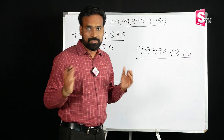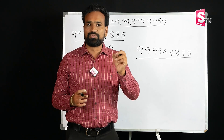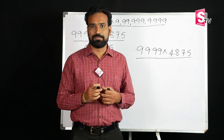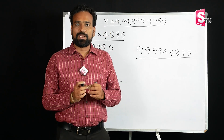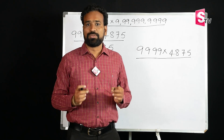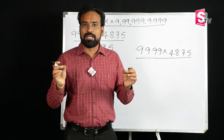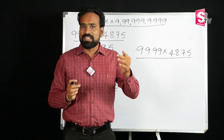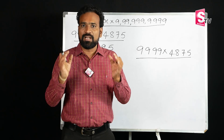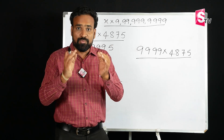Vedic Mathematics means 16 Sutras and 13 Sub-Sutras. The 16 Sutras form the first set. For example, if you have 100 and subtract 1, you get 99 — that is a high-value pattern. Numbers like 99 and 199 relate to this concept.